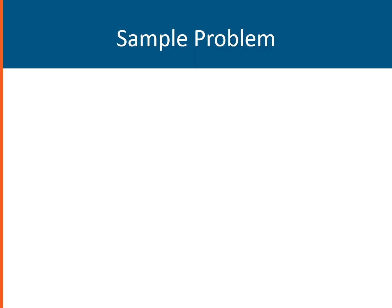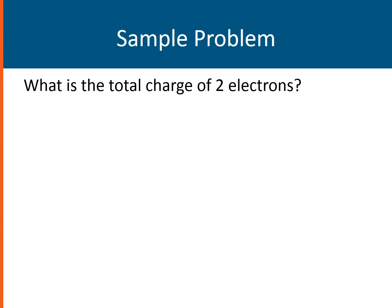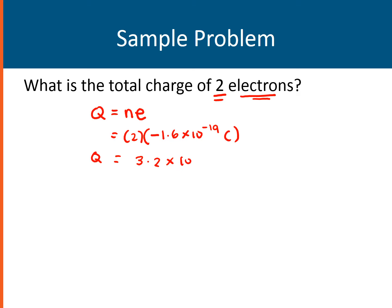Now let us do a sample problem. What is the total charge of 2 electrons? Remember, Q, or the total charge, is equal to N, the number of elementary particles, multiplied by E. So we have Q equals 2 multiplied by 1.6 times 10 to the power of negative 19 Coulomb. Therefore, the total charge of 2 electrons would be 3.2 times 10 to the negative 19 Coulomb. Take note that it is negative because it is an electron, so the electron is symbolized with negative E, equal to negative 1.6 times 10 to the negative 19 Coulomb.